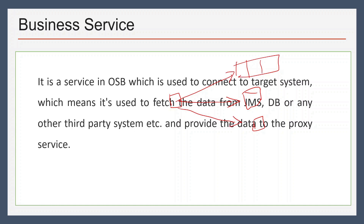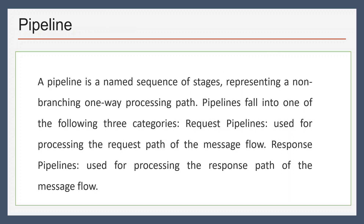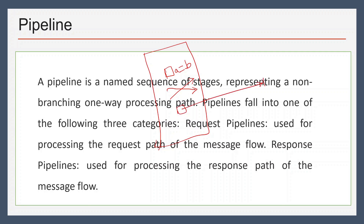We can call these target systems from our business service to publish data or to get some data from them. Third is a pipeline. It is a sequence of stages, and there can be multiple elements in the pipeline. Typically we have request pipelines for request processing and response pipelines for response processing. In the pipeline flow we can have multiple activities for assignment, transformation, or we can also call a target system from our pipeline.